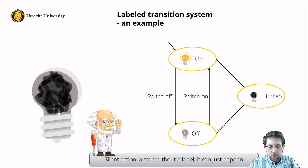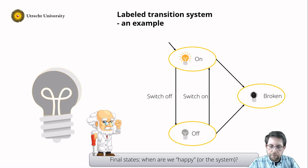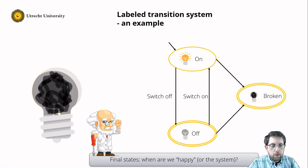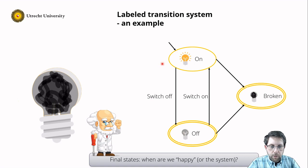Another question is: when are we happy? What are the final states of this model? We are happy if the lamp is switched off because then it doesn't cost money, so we denote off as a final state with a double edge. Similarly, the lamp is also happy if it doesn't work anymore, so broken is also a final state. This is the final labeled transition system of a lamp: it has the state on as the initial state, we can switch it off, switch it on again, and it can break. There are two final states: broken and off.